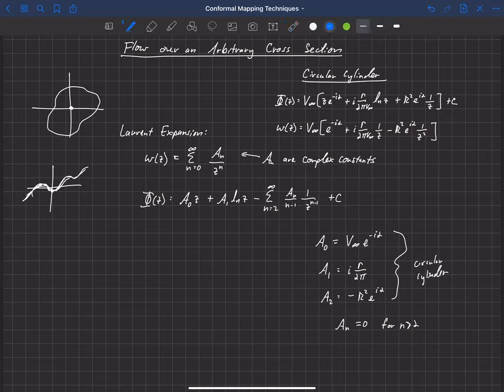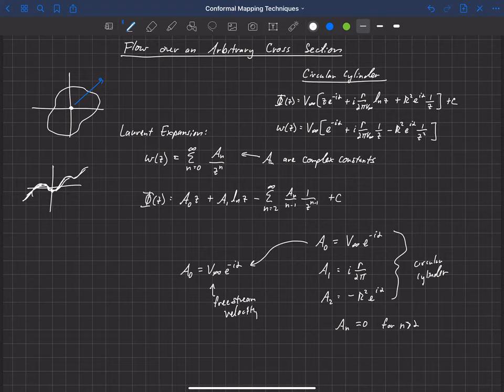So the further we get away from the origin, then all of these, this Laurent series simply converges to whatever that first constant was. So actually a_0 for all cases will be equal to V infinity e to the minus i alpha because that is our free stream velocity. So a_0 will always be set by that, that's simply our free stream velocity.